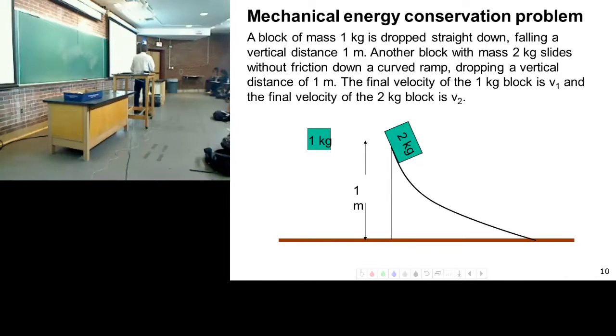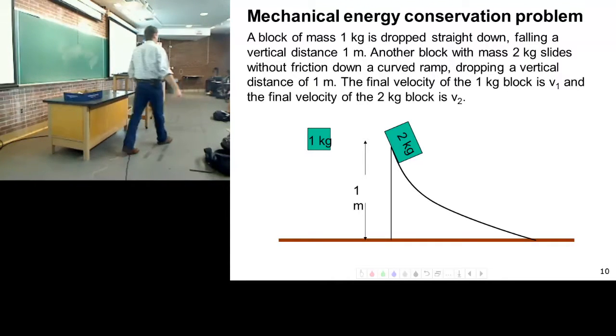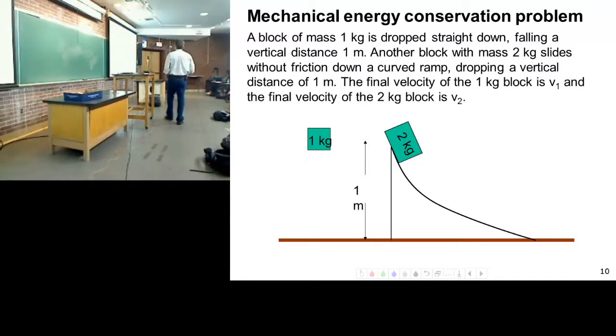So I have this situation. I have a one kilogram block that is dropped from a meter up in the air and falls straight down. Another block with two kilograms slides down a frictionless curved ramp dropping the same vertical distance of one meter but traveling a greater horizontal distance.